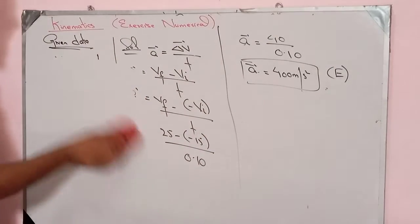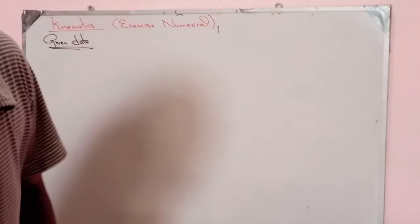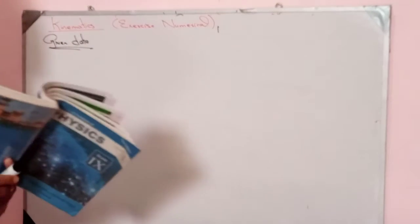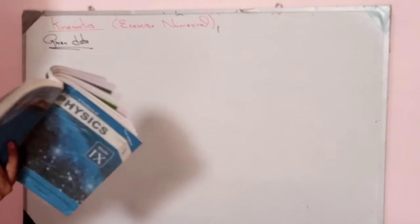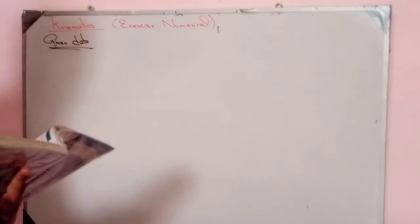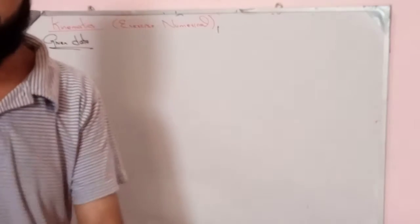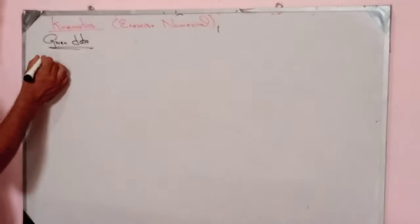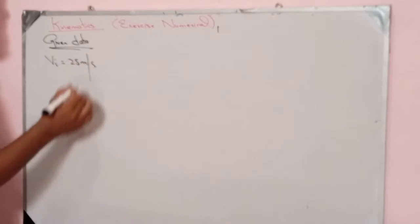Numerical number 2. Check what is given. A ball is initially travelling at 25 meters per second, hits a sand trap and slows down with an acceleration of minus 20 meters per second squared.